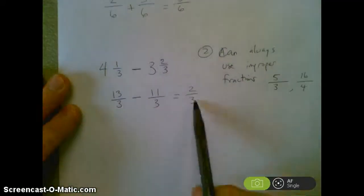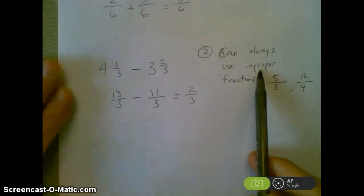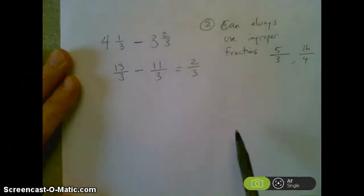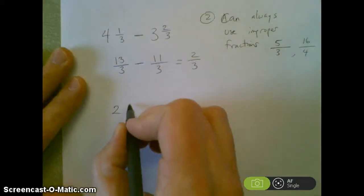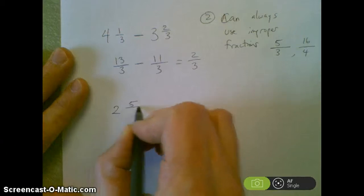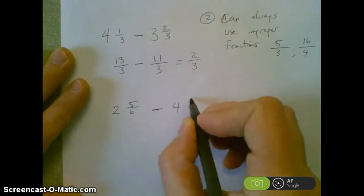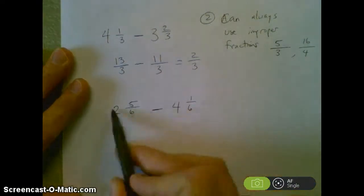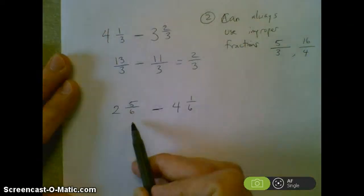The reason this works, or the reason this is important to know, is because these improper fractions can help you solve an answer, or solve a problem, where the answer will be negative. Like let's say I had 2 and 5/6 minus 4 and 1/6. This number is greater than that number. It means I'm going to have a negative. So if I convert these to improper fractions, then I'll be able to subtract,